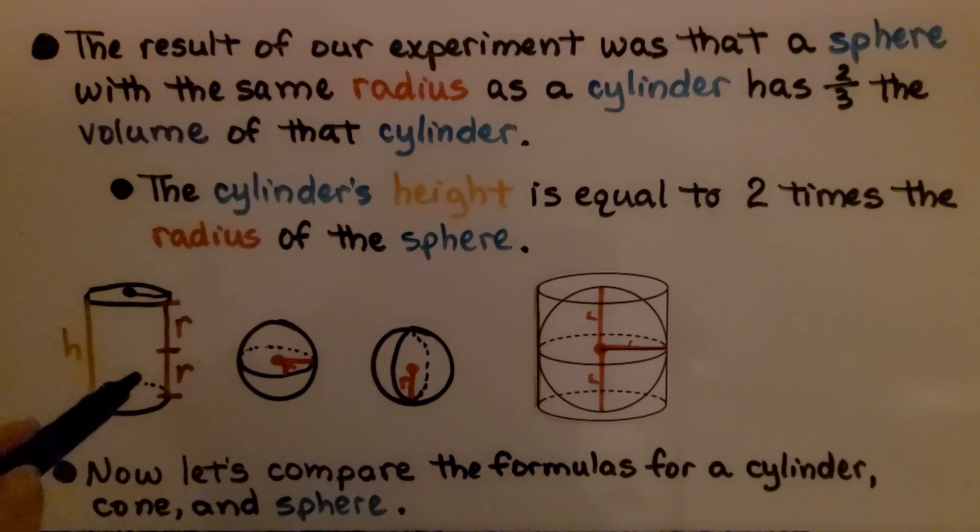If we turn it sideways, it'll take two of those. So the cylinder's height is equal to two times the radius of the sphere. Now let's compare the formulas for a cylinder, cone, and sphere.